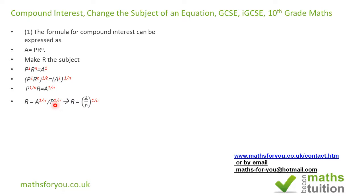I think in the exam, leaving it as R equals A to the power 1 over N divided by P to the power 1 over N should be fine, but writing it as (A/P)^(1/N) is neater.